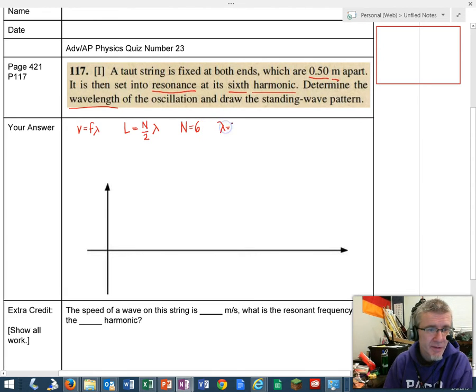In this case, we know that L, the length of this string, is fixed at both ends. Let me draw a dark line here, fixed at both ends.